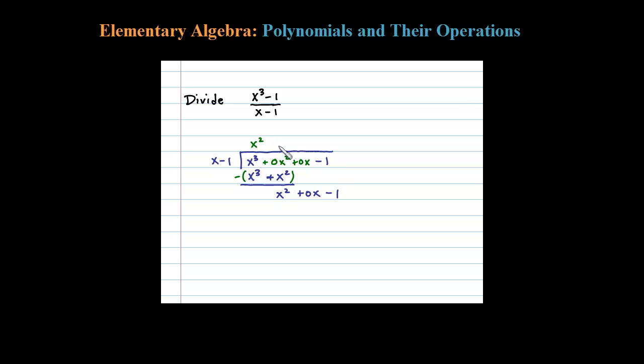Then do it again. What times x would give me x squared? Let's try plus x. That should match it. x times x is x squared. Distributing, x times negative 1 is minus 1x.